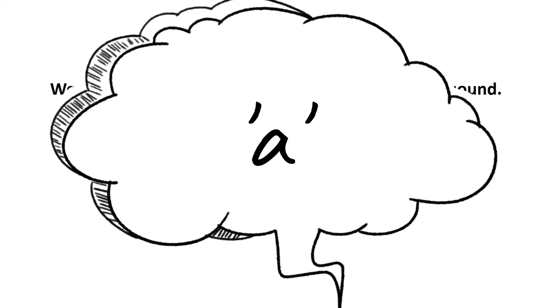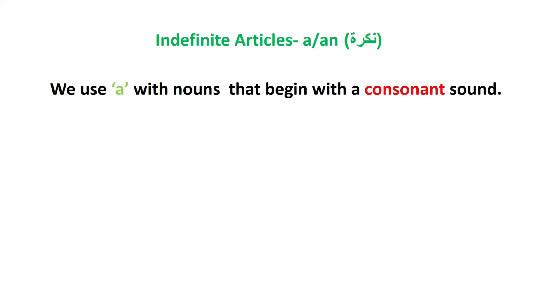We use 'a' with nouns that begin with a consonant sound, like 'a car' or 'a bag.' The 'c' in car and 'b' in bag are consonant sounds.